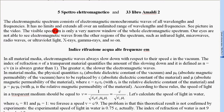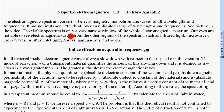The visible spectrum is only a very narrow window of the whole electromagnetic spectrum. Our eyes are not able to see electromagnetic waves from the other regions of the spectrum.